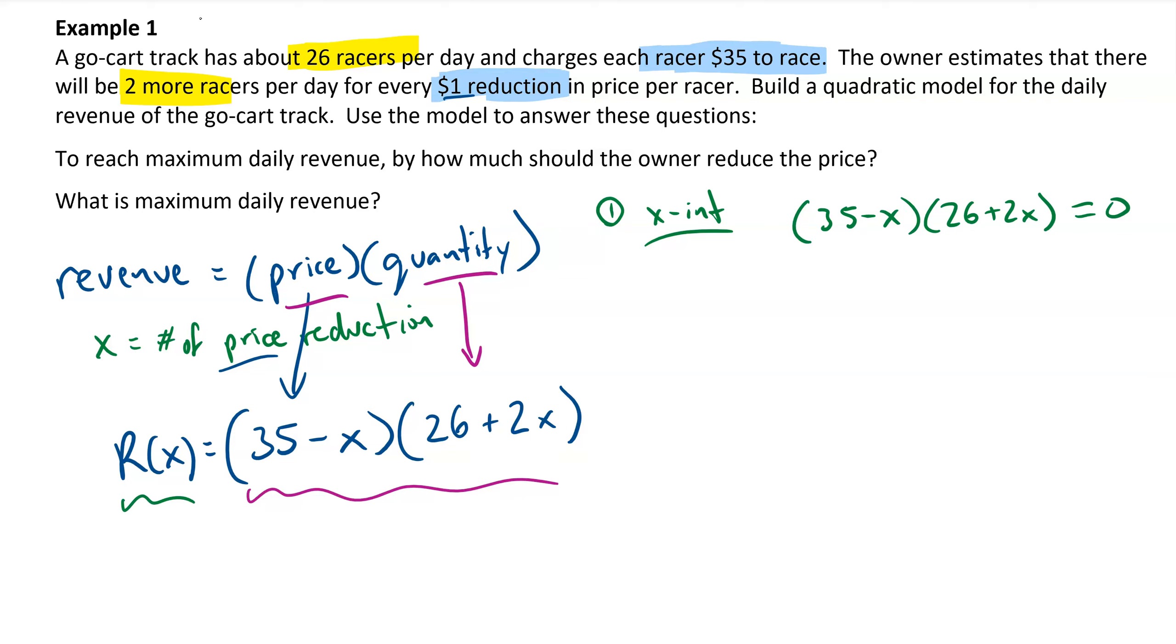The zero product principle allows me to split this into two simpler equations. 35 minus x equals 0, that's going to happen when x equals 35. And alternatively, the other equation would be 26 plus 2x equals 0, so 2x equals negative 26, or x equals negative 13.